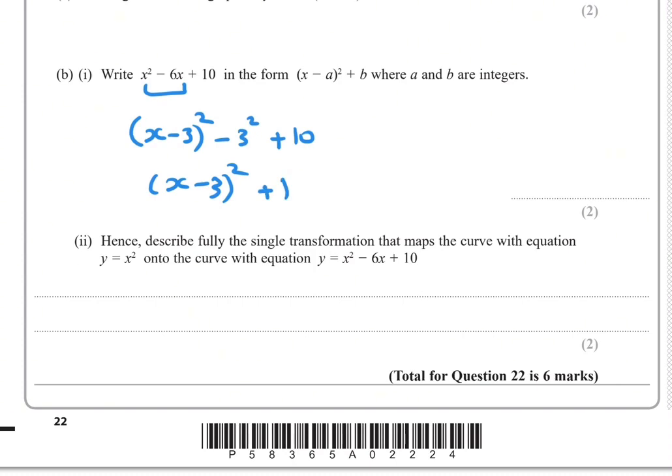Part b ii: Hence, describe fully the single transformation that maps the curve with equation y equals x squared into the curve with equation y equals x squared minus 6x plus 10. From y equals x squared to y equals...